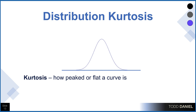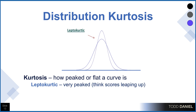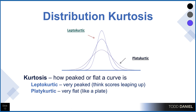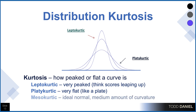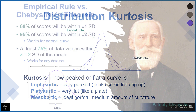A normally distributed curve has a very gentle kurtosis. Kurtosis is the measure of how peaked or flat the curve is. A leptokurtic curve is very peaked — think of the scores leaping up for leptokurtosis — meaning variability is smaller. Platykurtic curves are flat: the words 'plat' and 'flat' rhyme, or think of platykurtic like a plate being flat, which increases the standard deviation or variability. A normally distributed distribution would be mesokurtic — the ideal, medium amount of curvature.